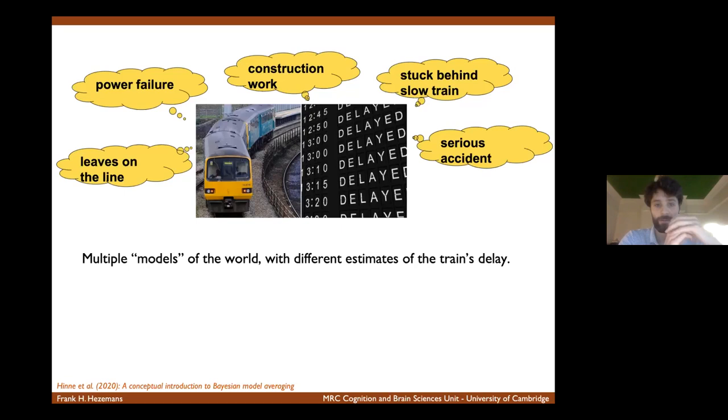Now, let's say you want to determine for yourself what's the most probable value of the train's delay time, because if it's too long, then you might as well just go home again. And one approach here would be to take just one model which is deemed the most likely explanation of why the train might be delayed and take that model's estimate of the train's delay.